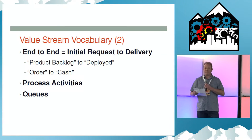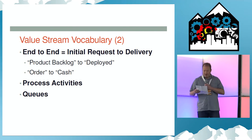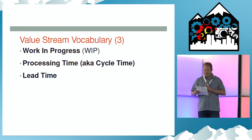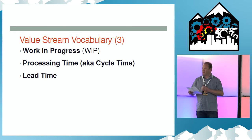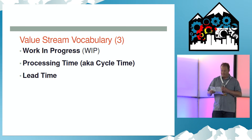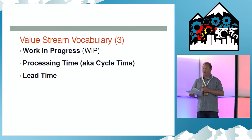Next are process activities, which are like high-level flowchart items. Queues are the items waiting for work to be done — these are regarded as non-value add time. Work in progress are items in the queue waiting for things to be worked on, while processing time is the value add time, something that the customer would actually pay us for doing. Lead time is the total process time plus the non-value add time like waiting in queues.